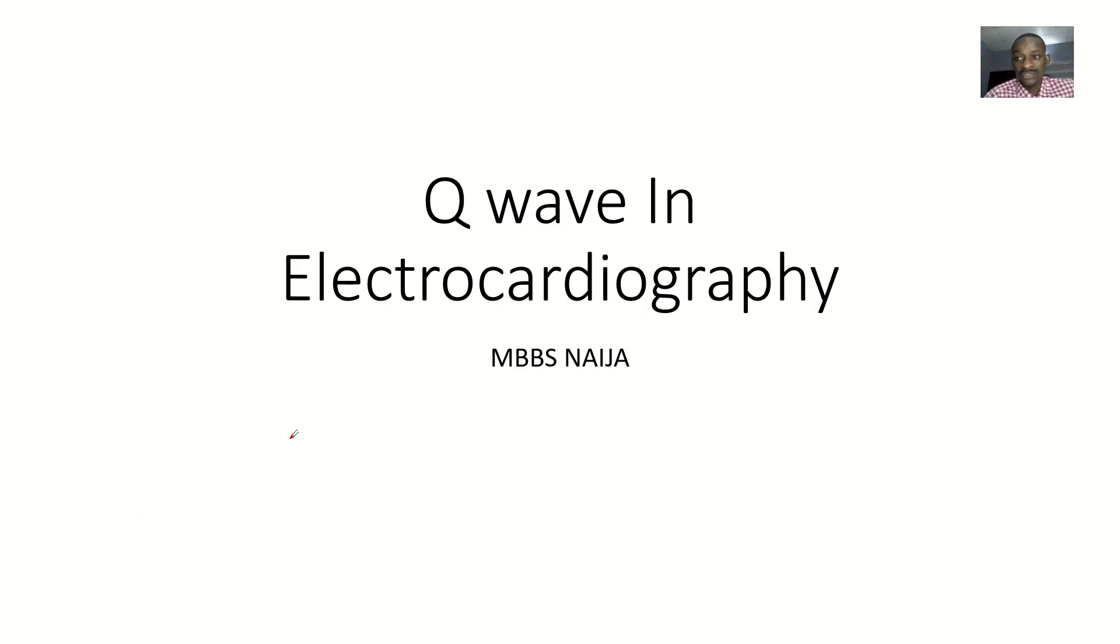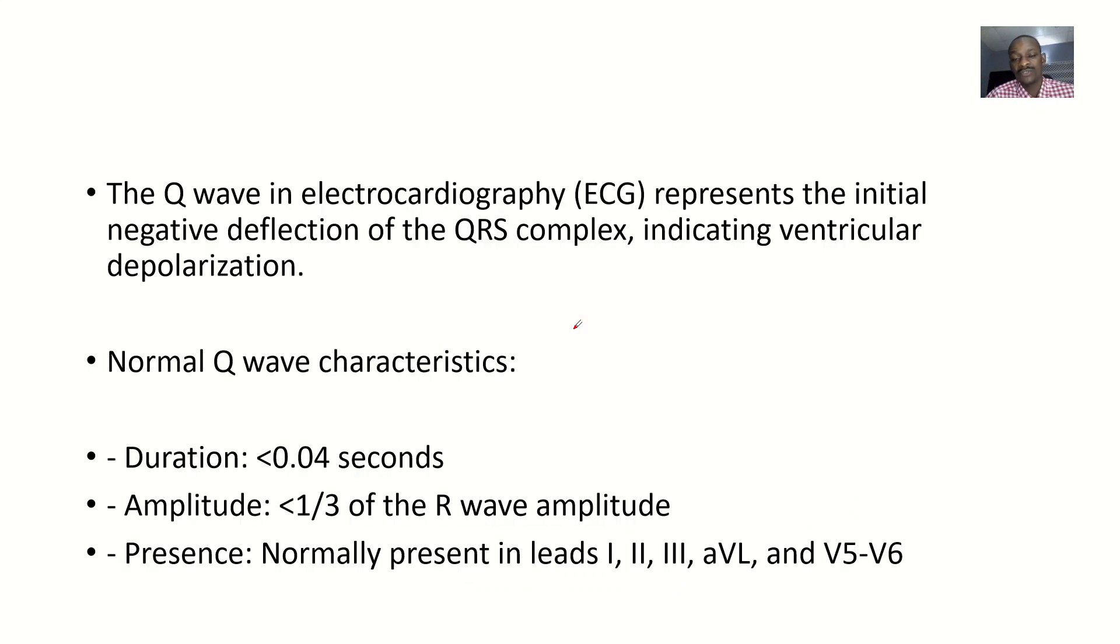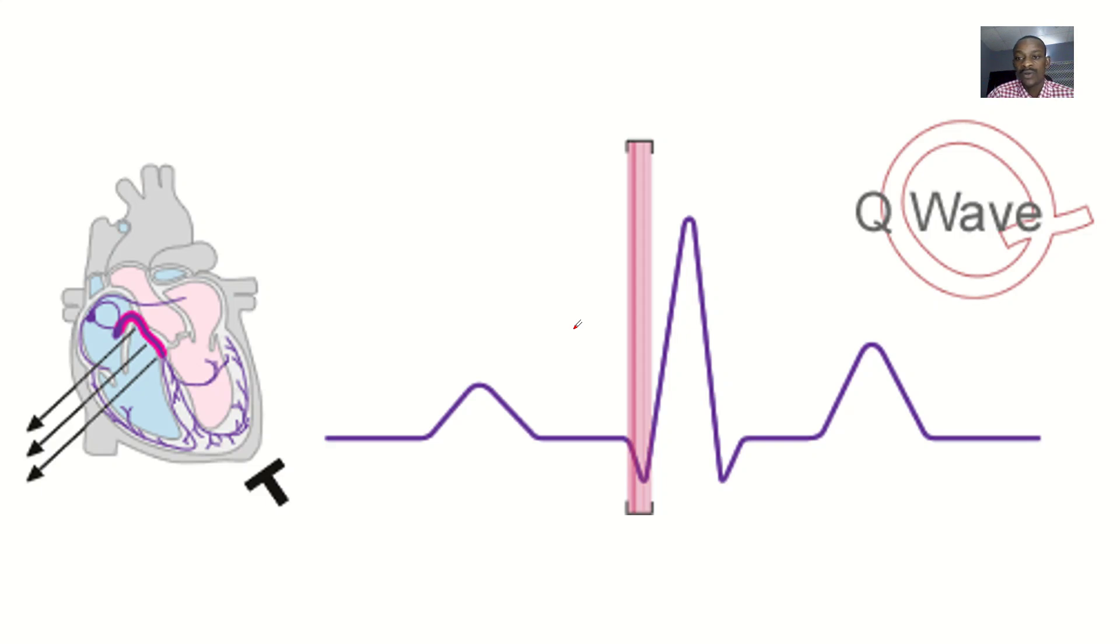The next type of wave we are studying in the ECG is the Q wave. The Q wave is one of the most popular waves in the ECG because it actually begins the QRS complex. So this is a Q wave.